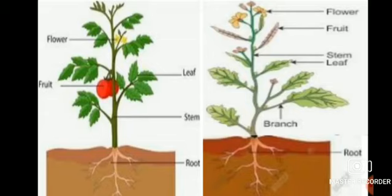Next one is branches. A branch is a green, thin and delicate stem that bears leaves, flowers and fruits. Next one is leaf. A leaf is a flat structure growing from the stem. Next one is flower. A flower is a colorful and beautiful part of the plant that has a lovely fragrance. Some flowers convert into fruit. Next one is fruit. A fruit contains seeds which convert into a new plant.